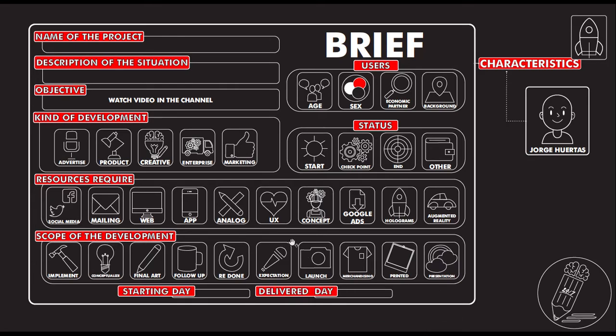After that, we need to say when we start — the start date — and very importantly, the delivery day: when is it going to be done? This is the basic main development; however, you can put other details in this brief so all the information is clear. The idea is that everyone involved in the project has a copy of this, so if you have any doubts, you can check it.